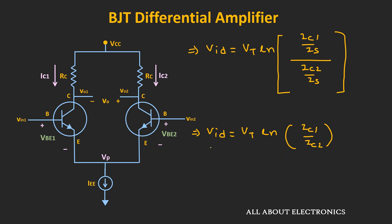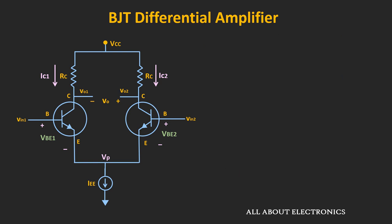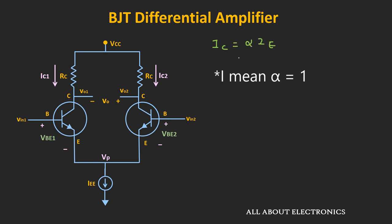Now let's find the expression of collector current Ic1 or Ic2 in terms of the differential input voltage. From this, collector current Ic1 equals Ic2 times e to the power Vid divided by Vt. For simplicity, let's assume that β for both transistors is very high, meaning α is approximately 1. In that case, collector current Ic1 equals Ie1 and collector current Ic2 equals Ie2.